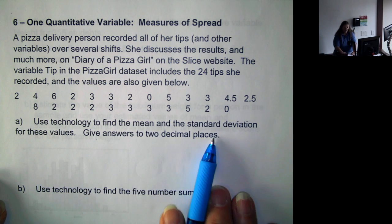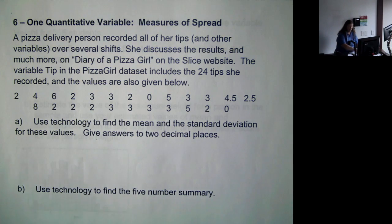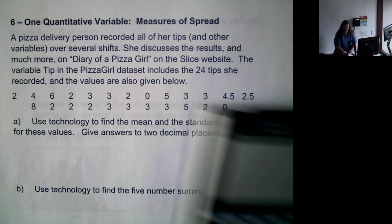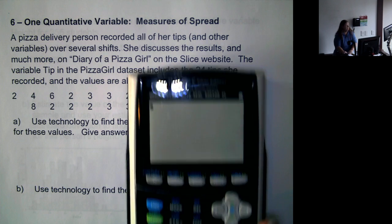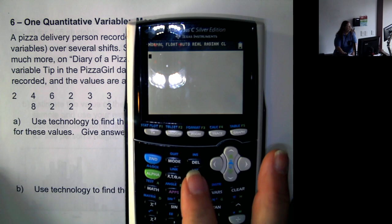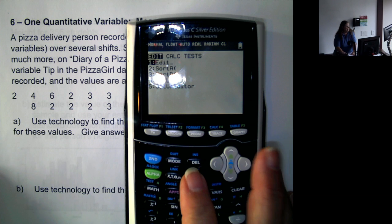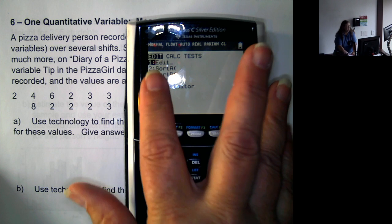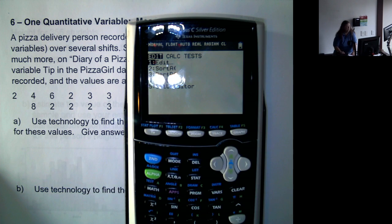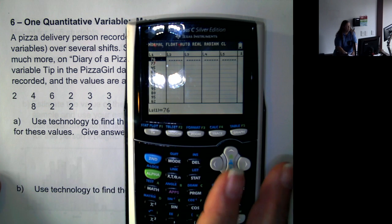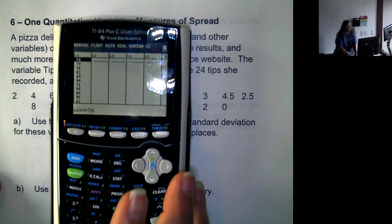So we want to use technology to find the mean and the standard deviation for these values. So we pull out our calculator. We're going to go to stat and then stay on edit because we're entering numbers. Anytime you're entering a dataset, you want to be on edit.